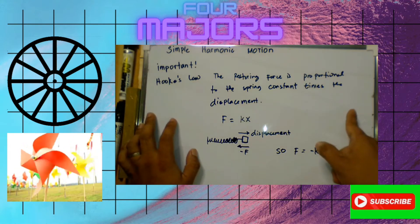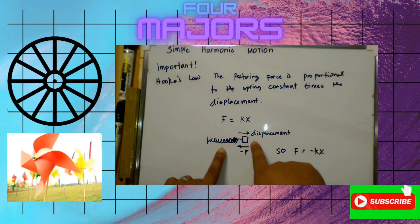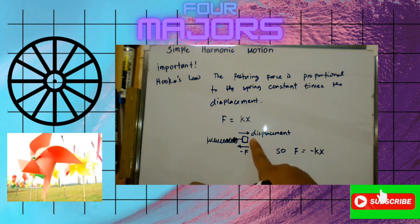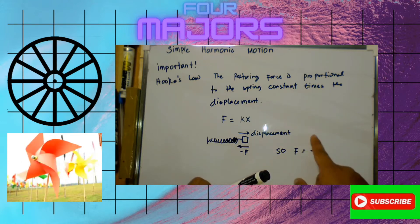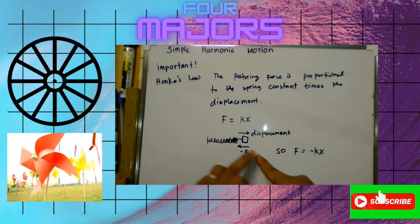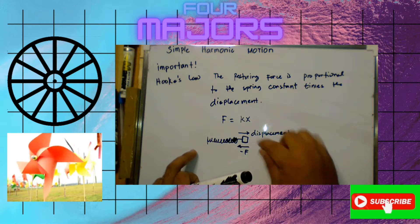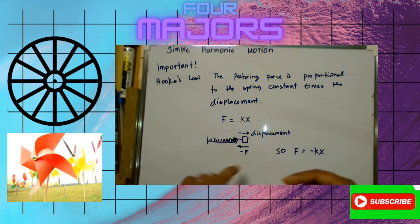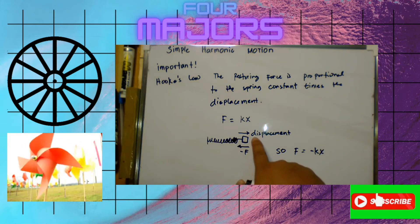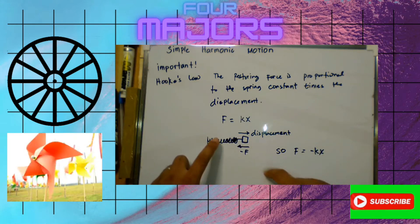Consider a spring with an object at the end. When you pull the object, it gains a displacement from its rest position. When you release it, the force acting on the object is in the opposite direction to the displacement — this is the restoring force.